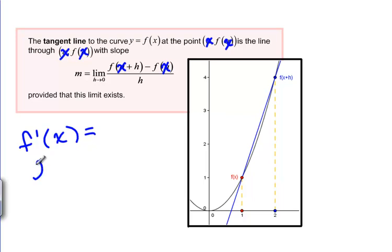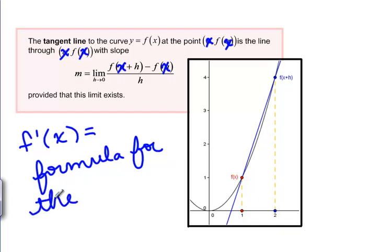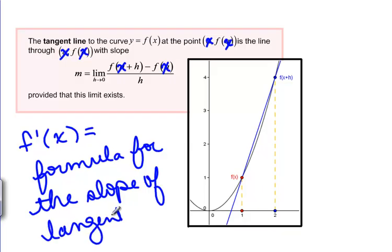Which is going to be a formula for the slope of the tangent line at x. So if you plug in a value for x into this f prime of x formula, you will get the slope at that point that you plug in.